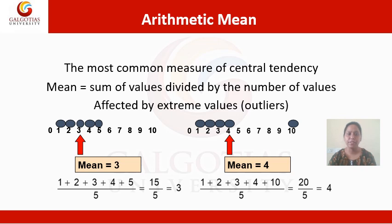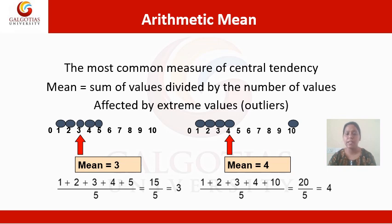The arithmetic mean is the sum of values divided by the number of values. One most important thing about arithmetic mean is that it always gets affected by extreme values, which we also reference as outliers. Outliers are basically an extreme value in the data set.